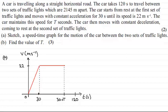Then we're told the car moves with constant deceleration, coming to rest at the second set of traffic lights. So if it's decelerating constantly, it's going to be a straight line down to the 120. So there's our speed-time graph for the motion of the car between the two sets of traffic lights.